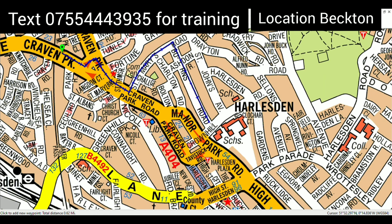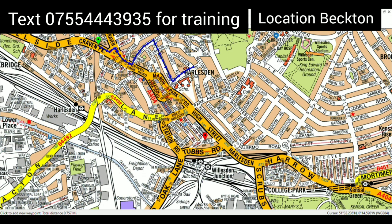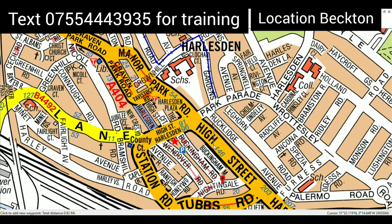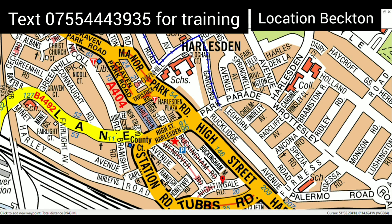If I turn right I'll join Manor Park Road, but the question says I cannot enter Manor Park Road, so I'm going to turn left. Now I can see where my red destination is — it's here — so I can turn right now.